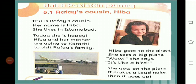Hiba and her mother are going to Karachi to visit Rafi's family. Of course when you meet your friends and cousins you become happy, and so Hiba is also happy. They are traveling from one city to another. Hiba goes to the airport. What is an airport? It is a place where we go to travel by plane — through the air.